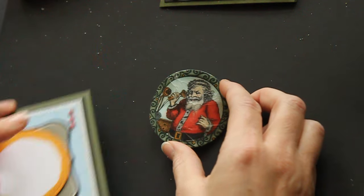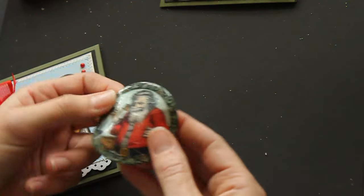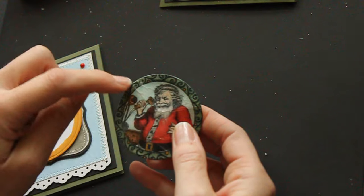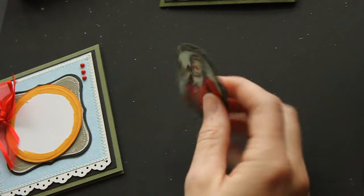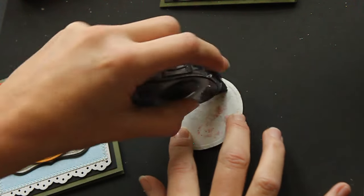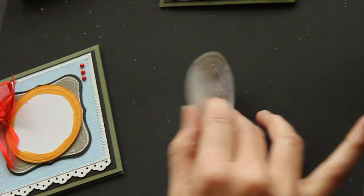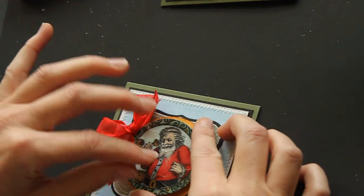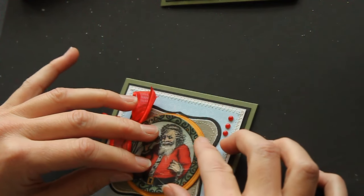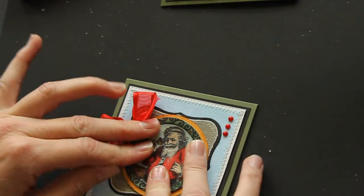Then you add it to your card. You could use a sponge and sponge inside the cracks for an even more antique look, or you can use it just like this on your card. Add a lot of adhesive because it is a heavy piece and it's bent a little bit from the embossing.